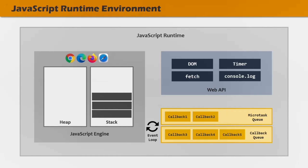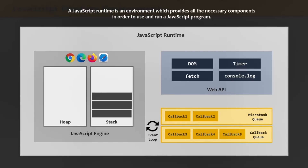A JavaScript runtime is basically an environment which provides all the necessary components in order to use and run a JavaScript program. These runtime environments can be slightly different when we use JavaScript in the browser versus in a server-side language using Node.js. However, the basic structure of the runtime environment remains the same.